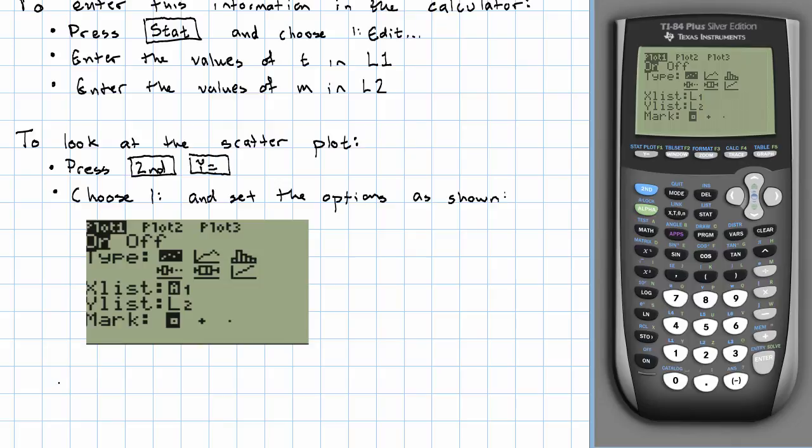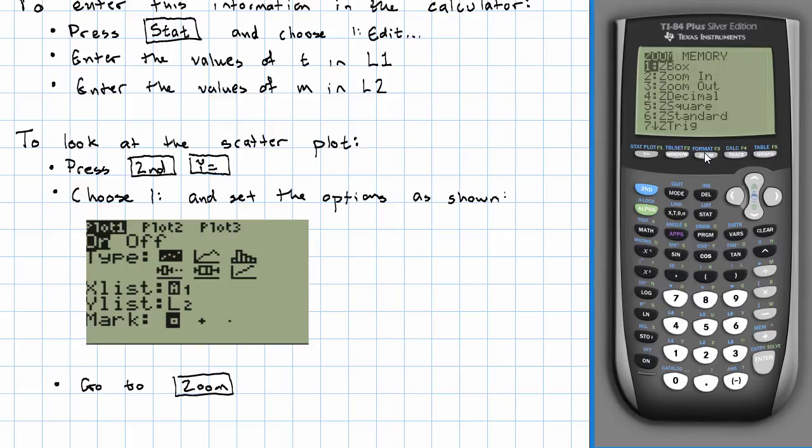So we choose option one and we set the options like this. And now, before we look at the graph, we want to go to Zoom. So press the Zoom button, and we want to choose Zoom stat. And here we see the scatterplot.